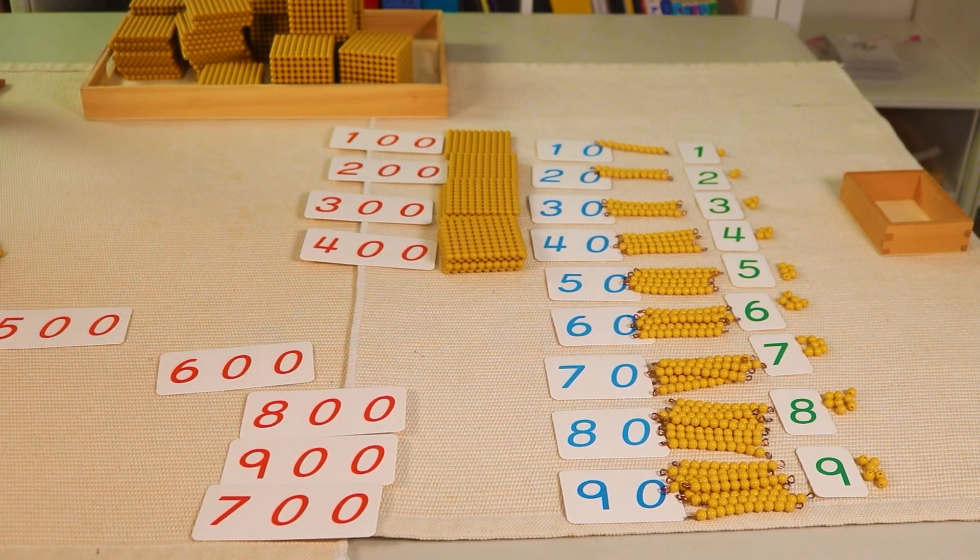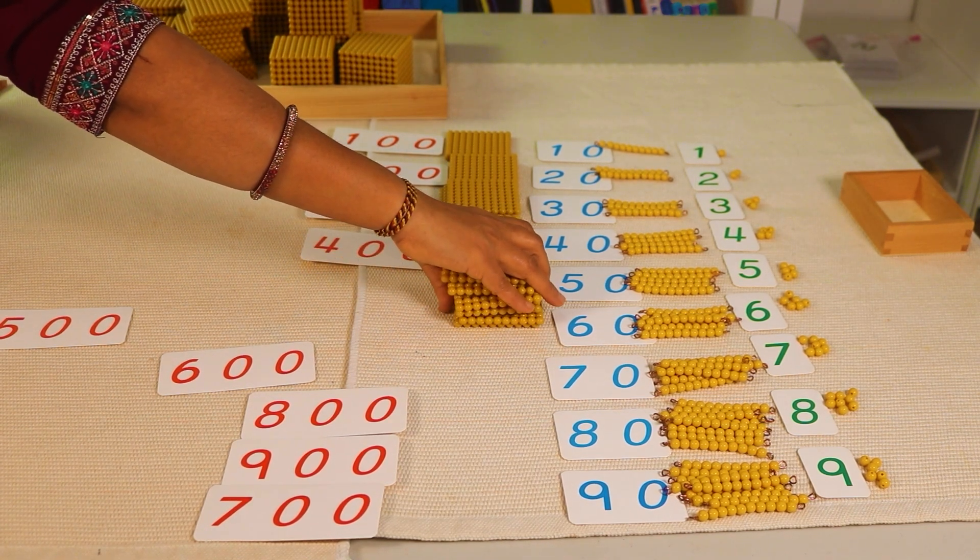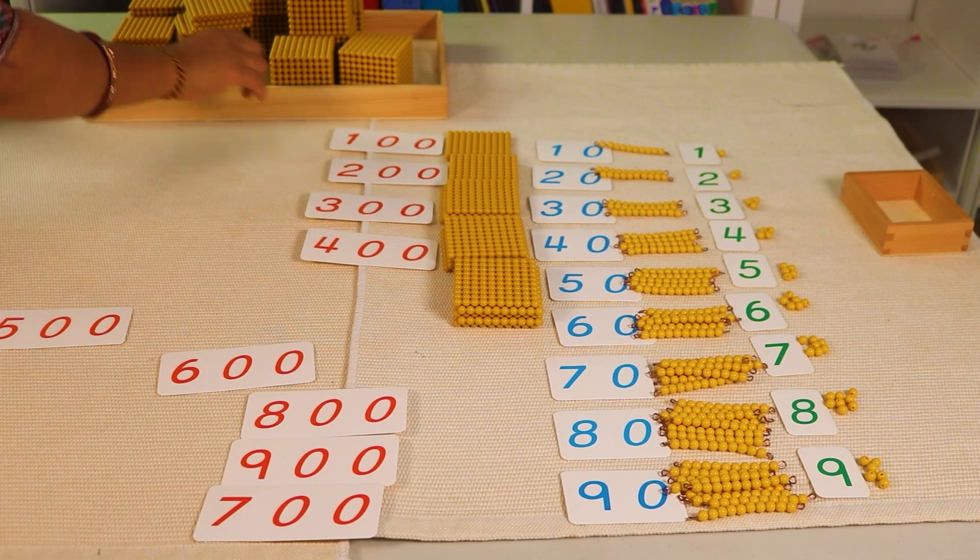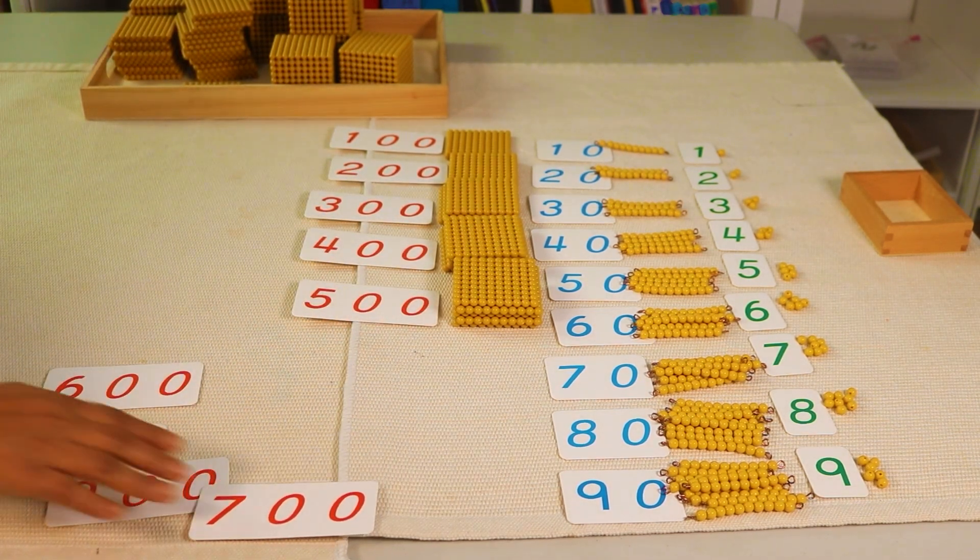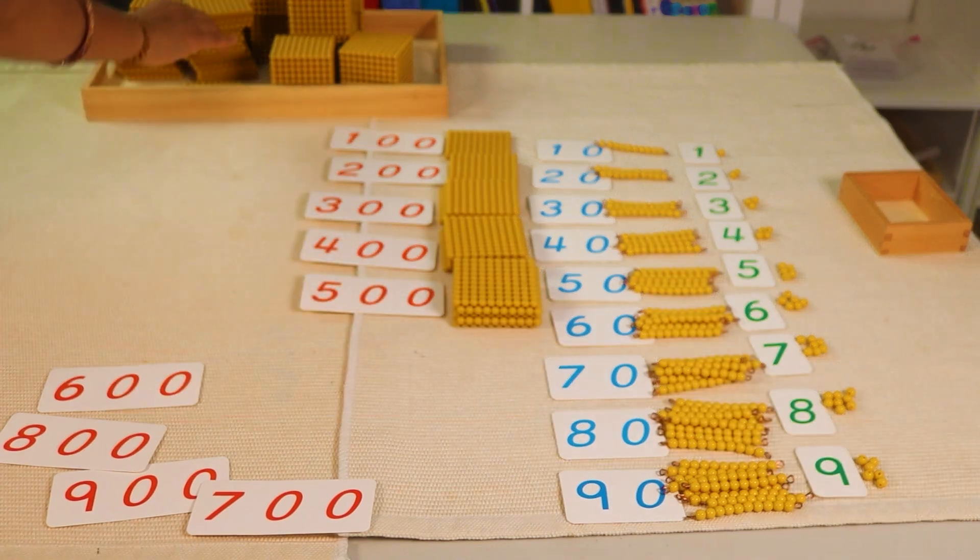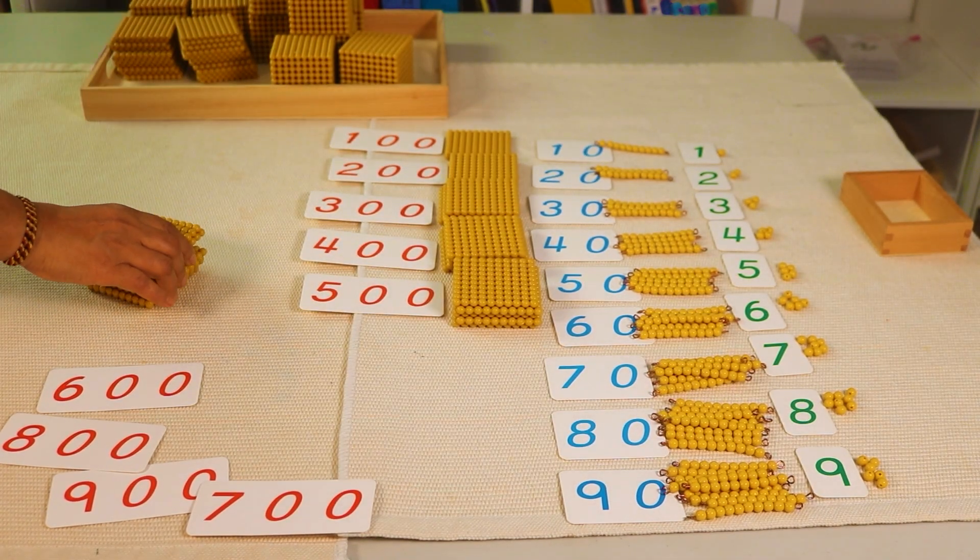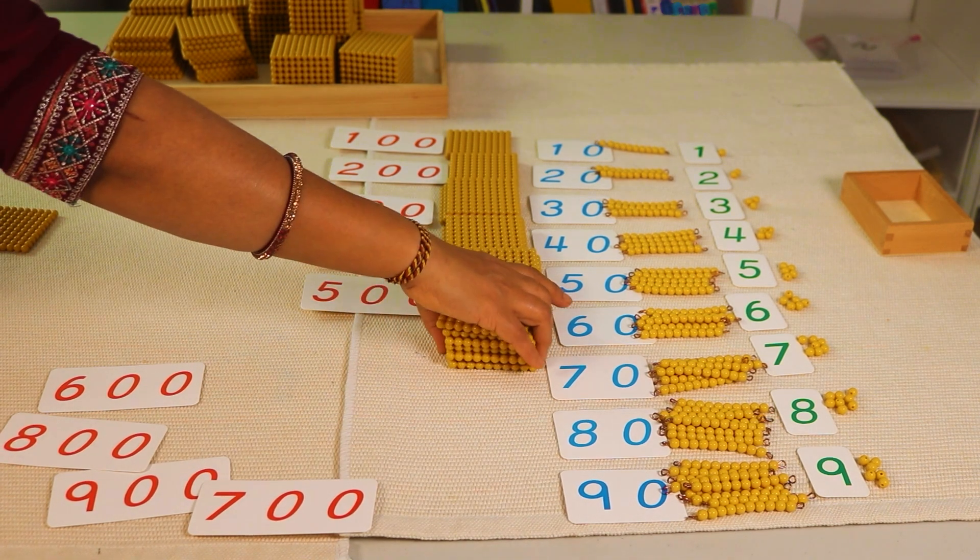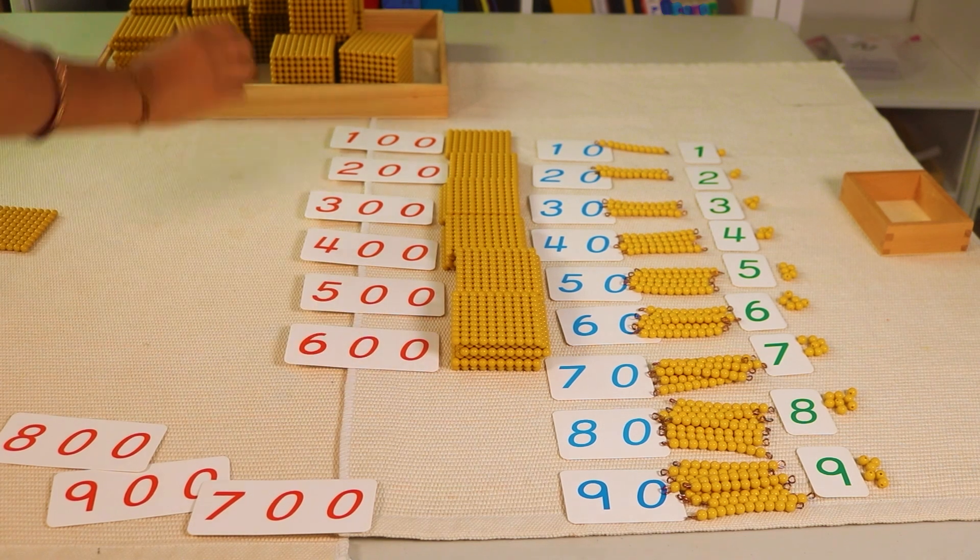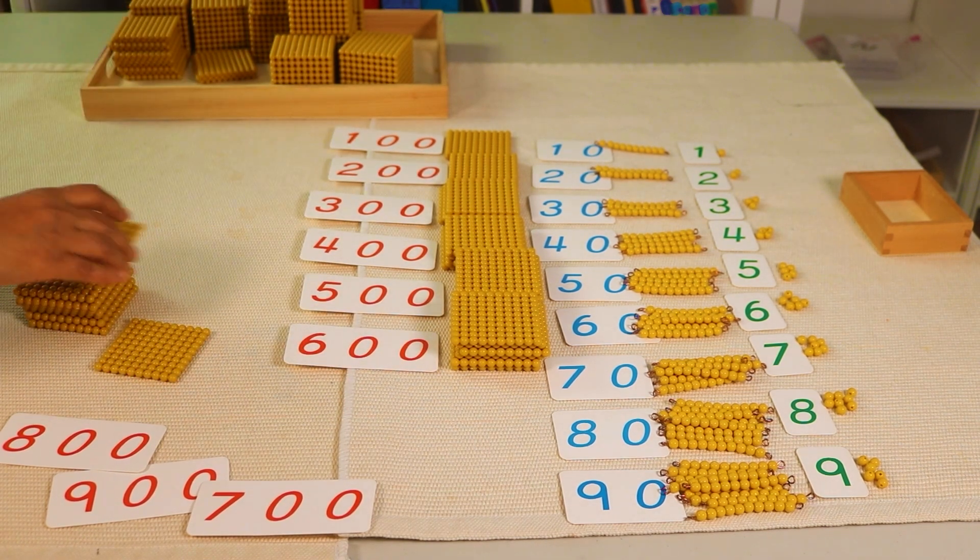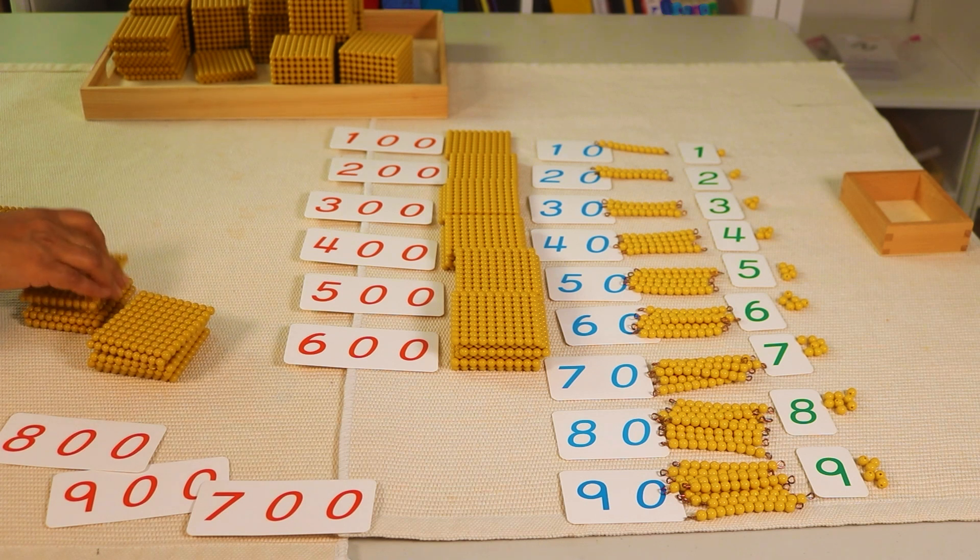What comes after four hundred? Now one, two, three, four, five hundred. This is five hundred. Six hundred. What comes after five hundred? That is six hundred. One, two, three, four, five, six. Seven hundred.